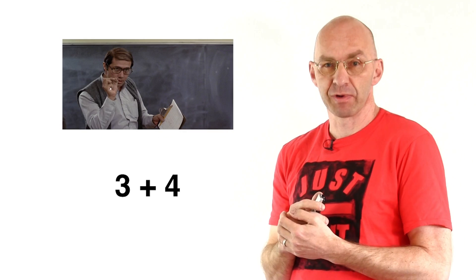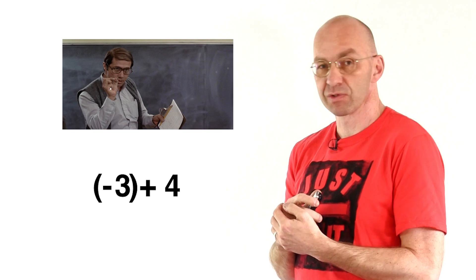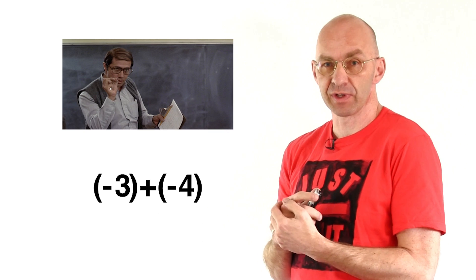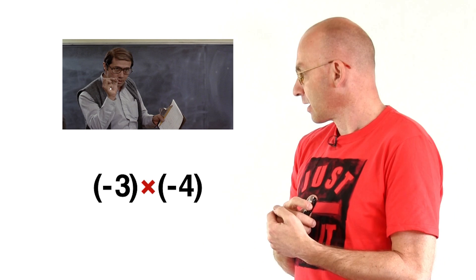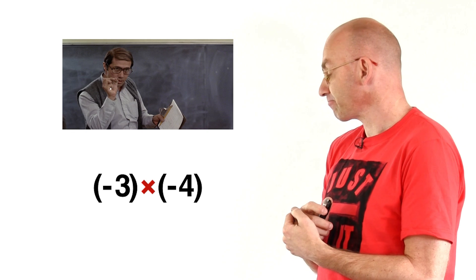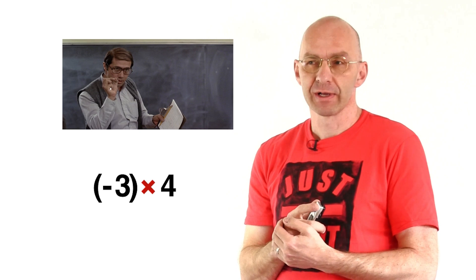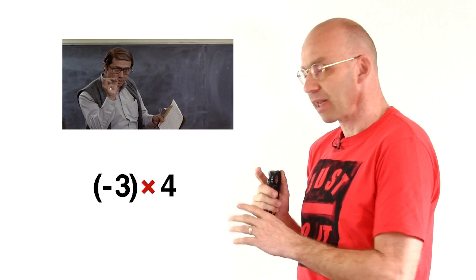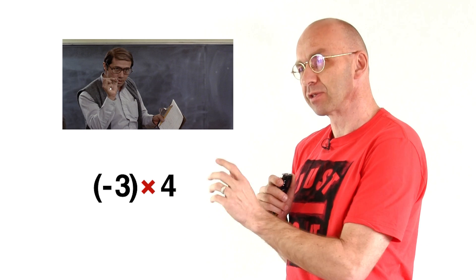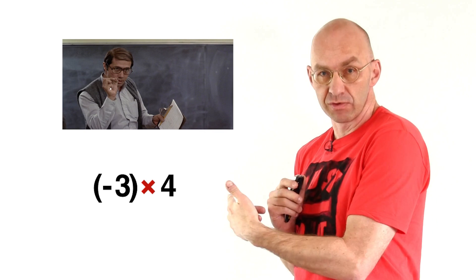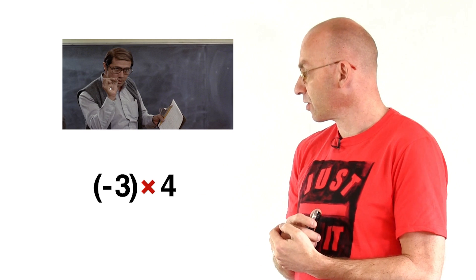Some things are under control. We've got 3 plus 4, obviously 7. Then somebody might be 3 in debt, gets 4, and that leaves him with 1. And 3 in debt going further 4 into debt gives 7 debt. Now for multiplication: minus 3 times 4 — we can handle that. It's minus 3 plus minus 3 plus minus 3 plus minus 3, which is minus 12.